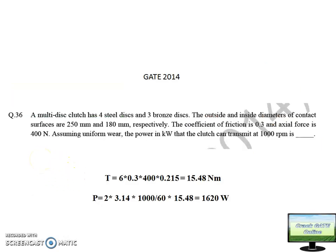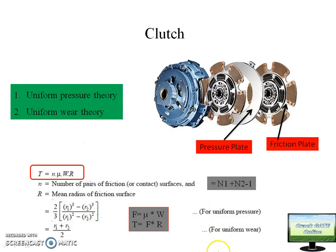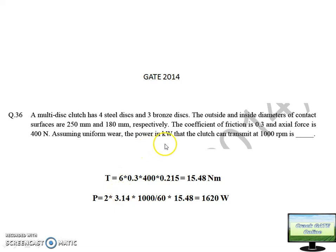On this theory, a question was asked in GATE 2014. A multi-disc clutch has four steel discs and three bronze discs. The outside and inside diameters of the contact surface are 250 mm and 180 mm respectively. The coefficient of friction μ is 0.3, the axial force W is 400 N, assuming uniform wear theory. They are asking for the power in kilowatts that the clutch can transmit at 1000 RPM.